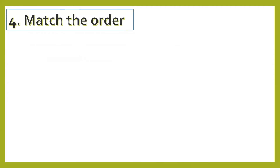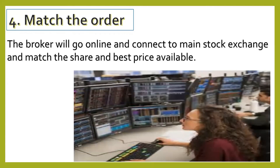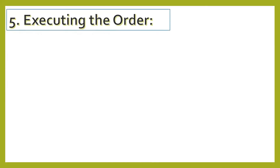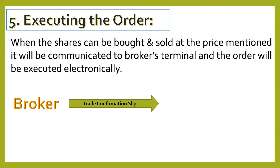After giving the slip, the next step is matching the order. The broker goes online to the stock exchange and tries to get the best price deal. Once a favorable deal is found, he will execute the order. When the shares can be bought and sold at the mentioned price, it will be communicated to the broker's terminal and the order will be electronically executed. The broker then issues a trade confirmation slip to the investor.